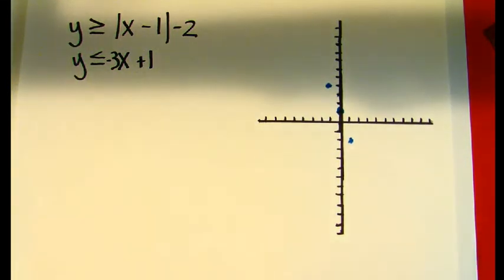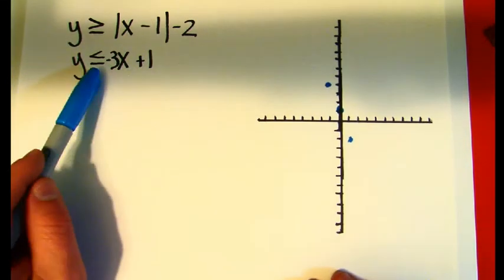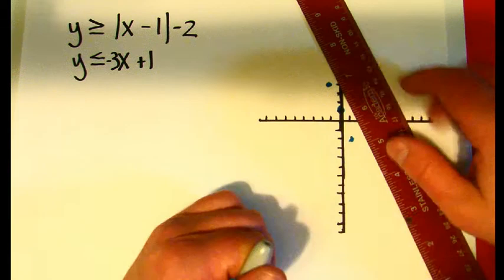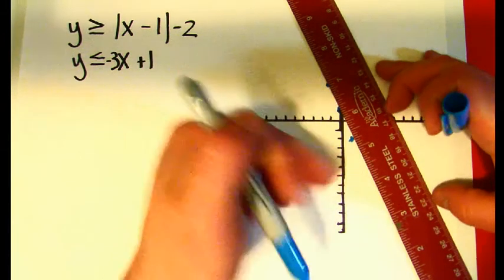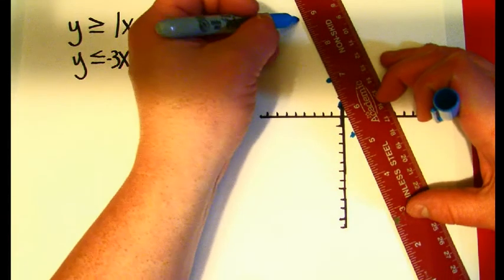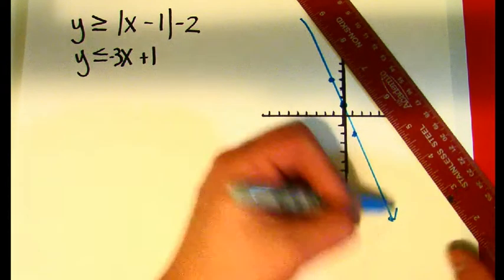From here, I need to decide whether it's dotted or solid, and it's a solid line because there's a line underneath, so the answers are included in the set because it's less than or equal to, so I need to line up my ruler correctly here, make a decent line.